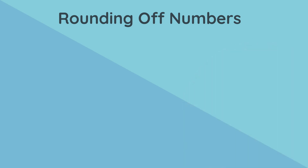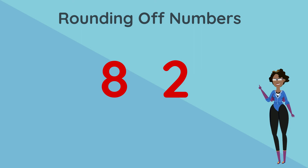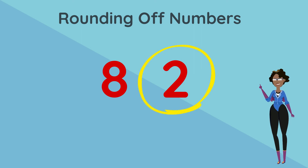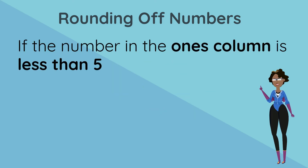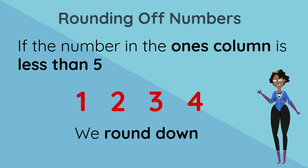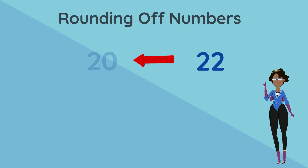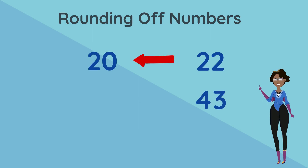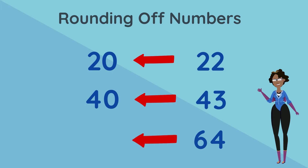We're trying to round to the nearest 10, so we must look at the number in the ones position to see if we should round up or down. If the number in the ones column is less than 5 — meaning 1, 2, 3, or 4 — we round down. For example, 22 rounds down to 20, 43 rounds down to 40, and 64 rounds down to 60.